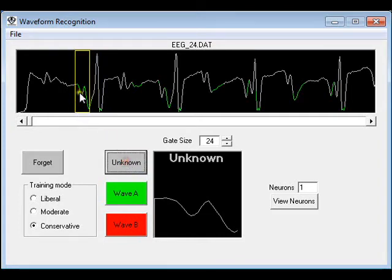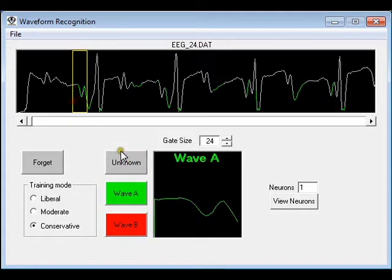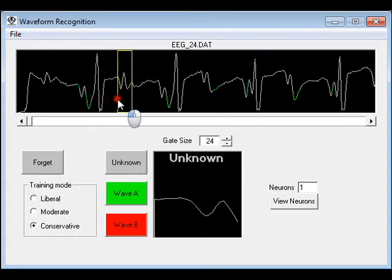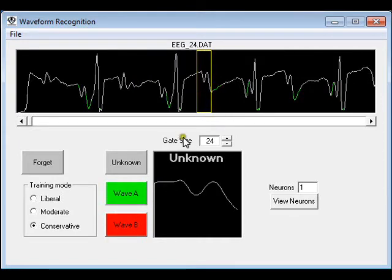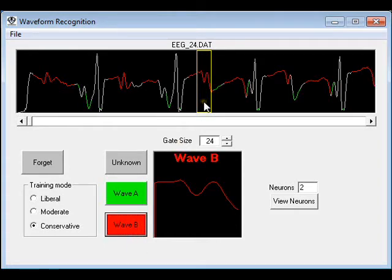I'm going to be a little more conservative and teach more unknown here. Now, I'm not an expert at EEG interpretation, so I'll just pick up another type of waveform and assign a waveform type B. Again, same symptom. The second neuron is a little too generous.